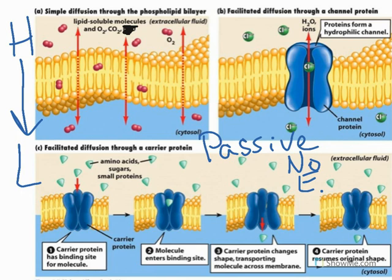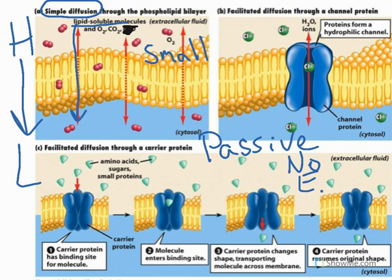There are a few different types of passive transport. The first is simple diffusion. This works well for lipid-soluble molecules and also very small molecules. These molecules, such as dissolved gases and certain vitamins, are able to fit right in between the phospholipids of the membrane and can move into or out of the cell that way.